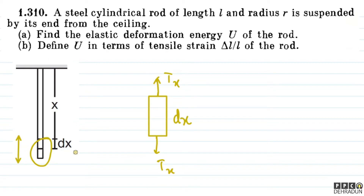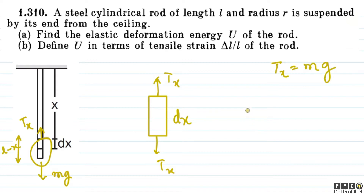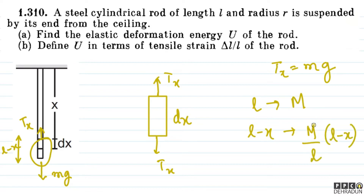Now, at position x from the top, the segment below has length (L - x). The force acting downward on it is mg, where small m is the mass of that segment. The tension at this position is Tx. Using the unitary method: if a rod of length L has mass M, then a rod of length (L - x) has mass M/L × (L - x). We substitute this to find Tx.